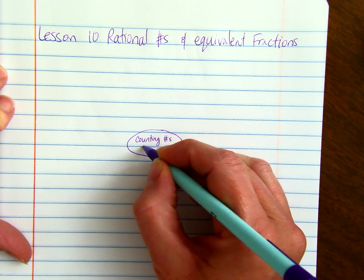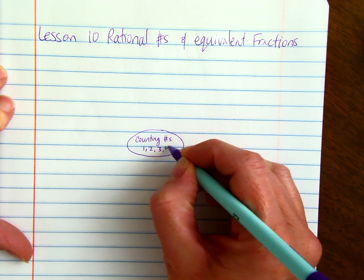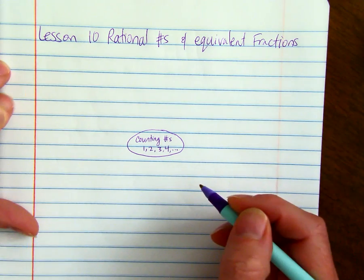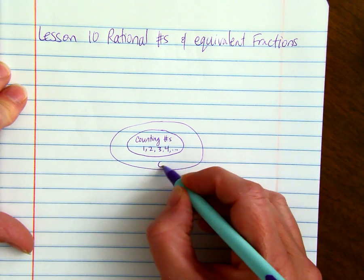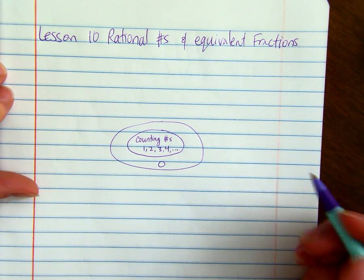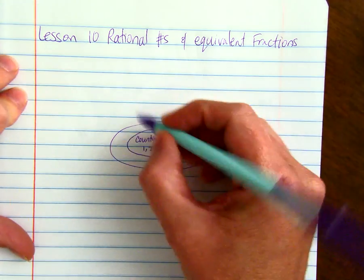We'll call that counting numbers. Another name for counting numbers is natural numbers. Then if you add zero, you get a slightly bigger set, bigger by one number, and that's called the whole numbers.